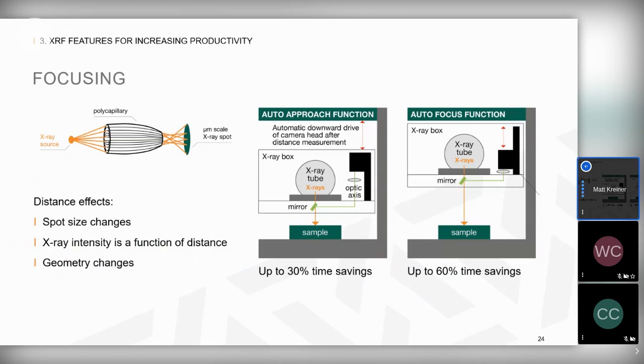Some instruments have a way to automate focusing. With a feature called auto approach, the desired focal distance is selected during calibration. When the operator measures a part, they position the part under the x-ray tube and click to start auto approach. The instrument uses a sensor to measure the distance to the part and automatically drives the analysis head up or down into the right position. This is quick and reproducible and removes decisions from the operator's task.